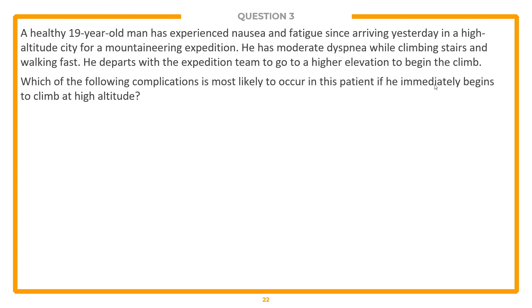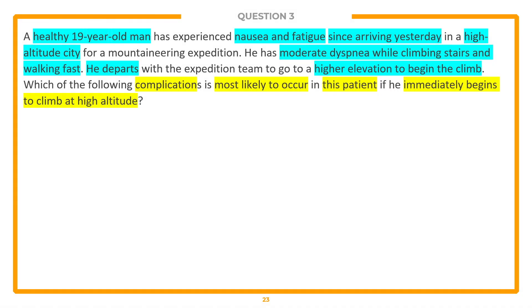Thank you, Jeff. We're going to show you what we think are the important clues in this vignette and lead-in. We've got a younger patient — a 19-year-old man — and they specifically went out of their way to tell us that he's healthy. They then tell us his presenting signs and symptoms: nausea and fatigue. Whenever you're dealing with these types of questions, always make note of the temporal association — when did they arrive at this altitude? Is it yesterday or a week ago? They then tell us, importantly, that he is departing to a higher elevation.